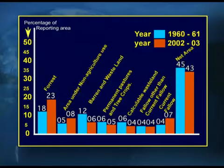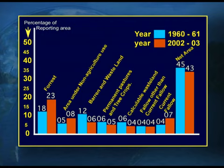Before taking up the categories, I would like to show you this visual. This visual shows the changes in the land use categories in India for the years 1960-61 and 2002-03. This is a multiple bar diagram showing the two different years under the different categories. You can see that the forest land has increased over the last 40 to 42 years.